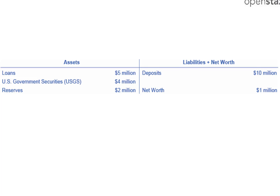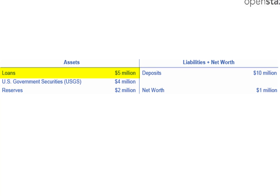Let's define some accounts on the balance sheet shown here. Deposits on the liabilities and net worth side are the funds that people bring to the bank and put in checking and savings accounts. Deposits are liabilities because the owners of those accounts have a claim on those assets and can withdraw them. On the asset side, the bank has a choice to keep the deposits — the money — in a vault; in this case, they choose to keep two million dollars. These are called reserves. The bank can also lend these deposits out to borrowers; these are called loans, also an asset. The last asset the bank has here are U.S. government securities, which are investments in the U.S. through bonds and notes.